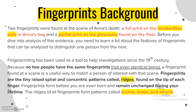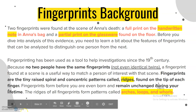Fingerprints are the tiny ray, spiral, and concentric patterns called ridges found on the tip of each finger. Fingerprints form before you are even born and remain unchanged during your lifetime. The ridges of all fingerprints form patterns called arches, loops, and whorls.